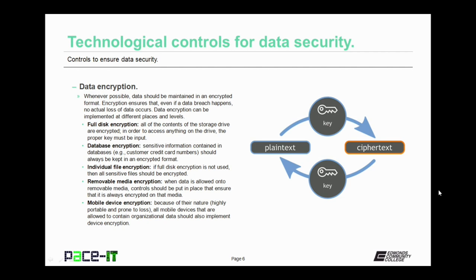There's also database encryption. Sensitive information contained in databases, such as customer credit card numbers or personally identifiable information, should always be kept in an encrypted format. Data encryption may also occur at the individual file level — if full disk encryption is not used, then all sensitive files should be encrypted. If removable media is allowed for data storage, there should be technological controls put in place to encrypt that data. There is also mobile device encryption; all mobile devices that are allowed to contain organizational data should implement full device encryption.